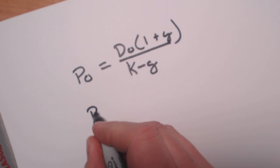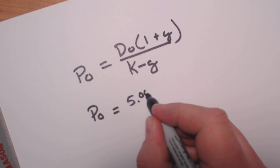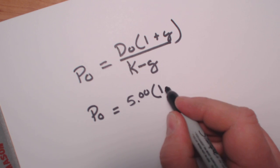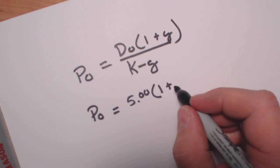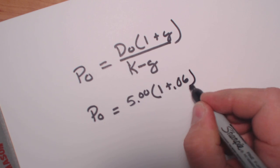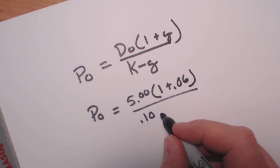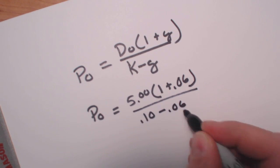Let's take a look at our variables. P0 equals our dividend, which was $5, times 1 plus the constant growth - we said 6%, so 0.06 - over k, which is 10%, minus the 0.06.